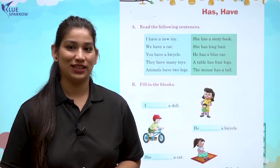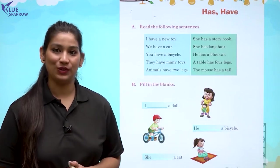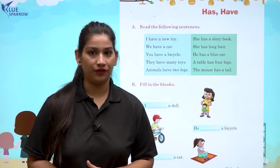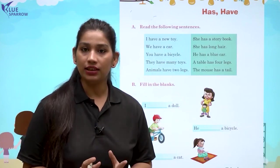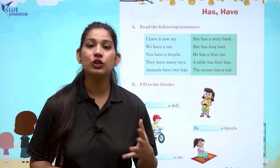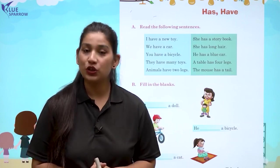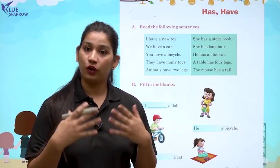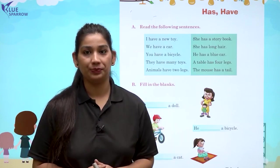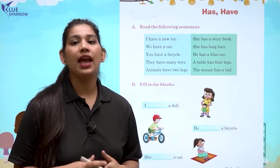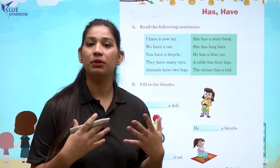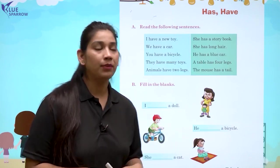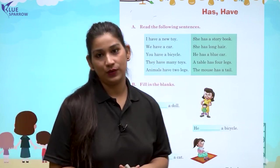Hello students, welcome to the session. I hope you all are doing good. Our concept for today is has and have. Has and have are used to show possessions, which means the thing or something which belongs to you or to someone. Agar koi cheez aap ki hai ya kisi aur ki hai jo kisi ko belong karti hai, jab hum uske baare mein kuch batate hai, tab hum has ya have ka use karte hai.